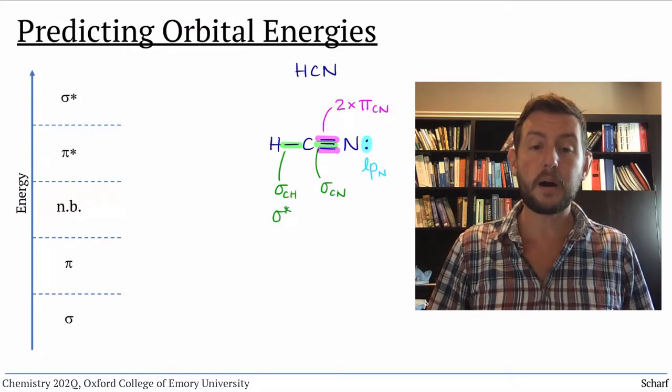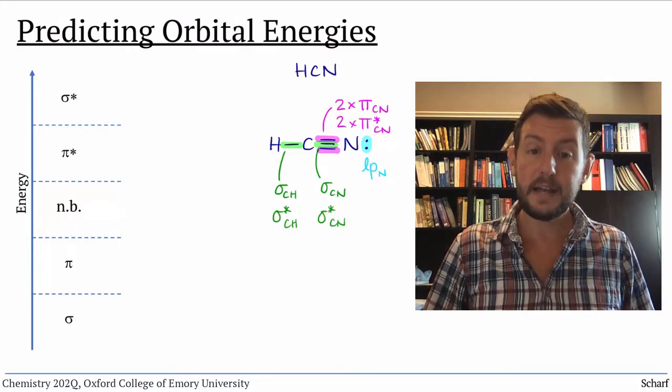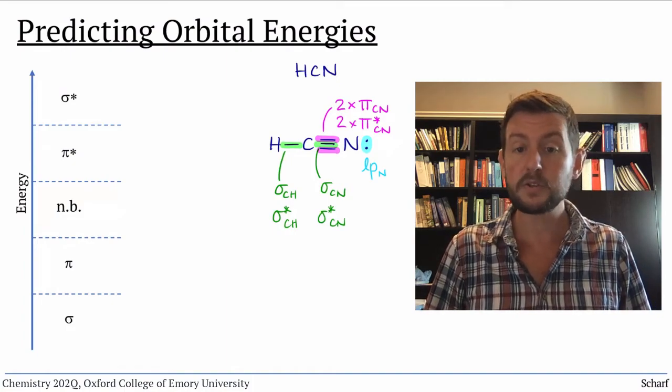For each bond, we know there's a corresponding antibonding orbital as well. Now, we need to arrange these orbitals according to their energies, based on the trends we discussed.